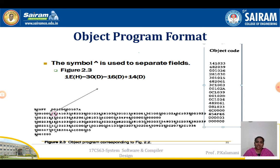In this class, we have seen what an assembler directive is, what the basic functions of an assembler are, the different types of assemblers, and the format of the object program — that is the header record, text record, and end record. Thank you.